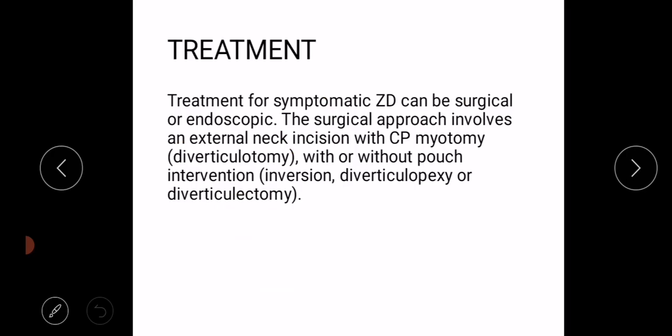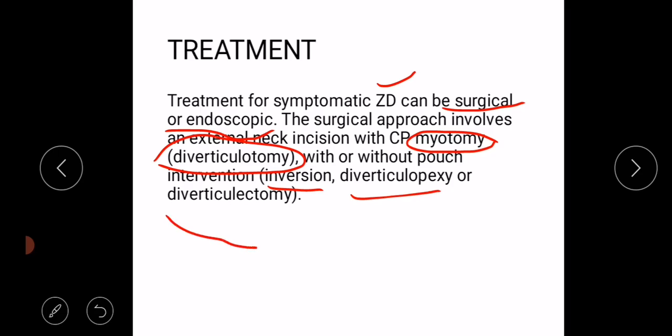Treatment for symptomatic Zenker's diverticulum is mostly surgical or endoscopic. The surgical approach involves an external neck incision with cricopharyngeal myotomy, also known as diverticulectomy, with or without pouch inversion or diverticulopexy. This is all about Zenker's diverticulum.